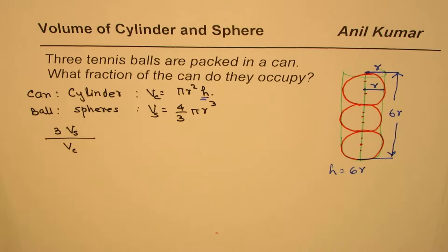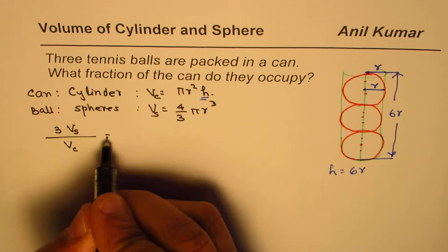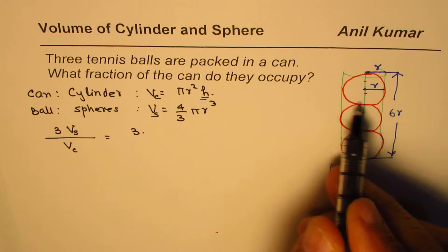Height is six times radius for the can which is cylindrical in shape. So now we can write down that three identical balls...